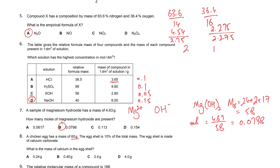A chicken egg has a total mass of 60 g. The egg shell is 10% of the total mass, so 6 grams, and is made of calcium carbonate. Calcium carbonate has an Mr of 100 and calcium has Ar of 40, so the percentage of calcium is 40%. The mass of calcium is 40% × 6 g = 2.4 grams.